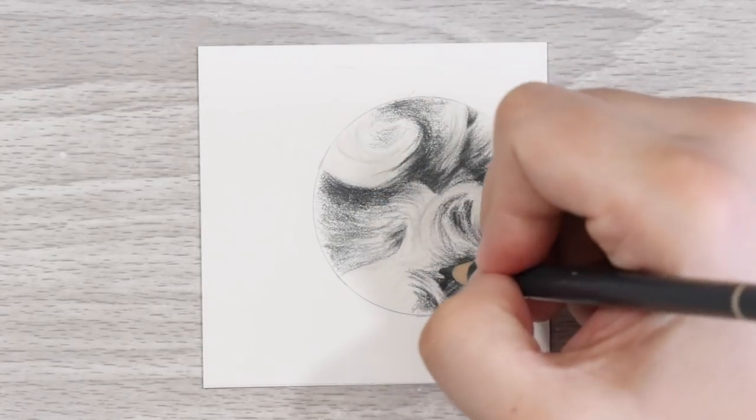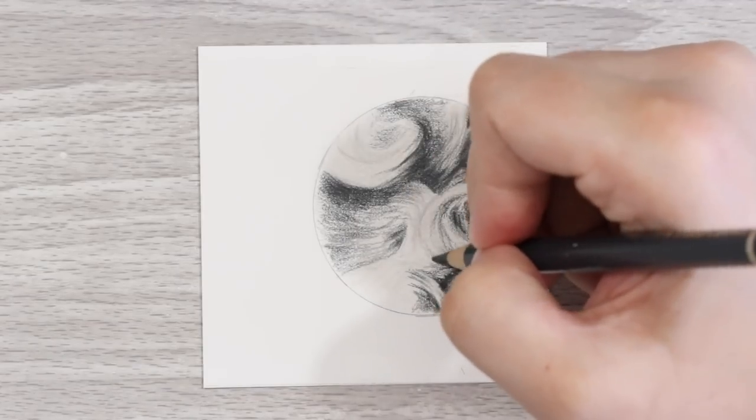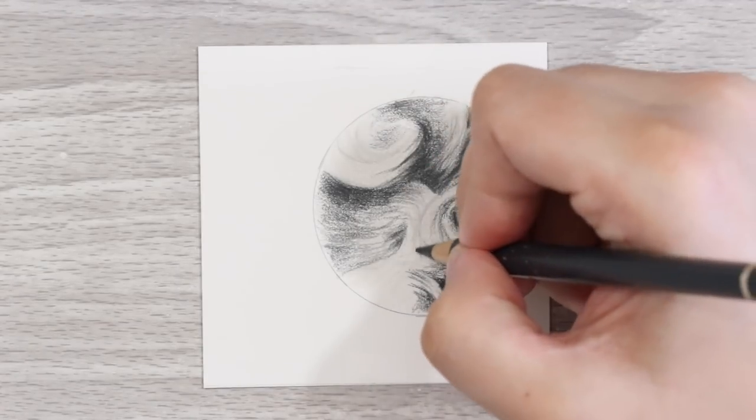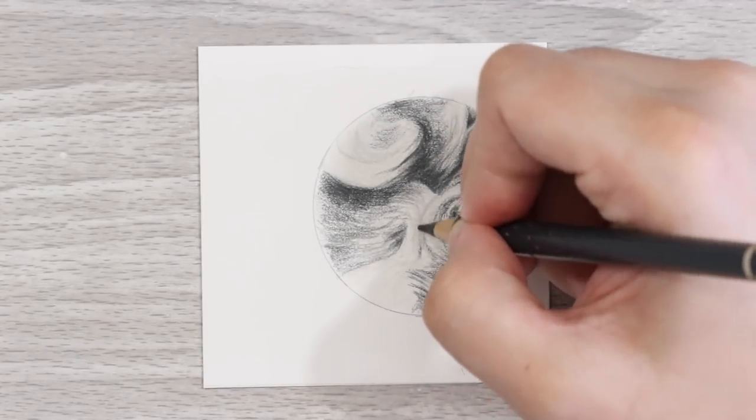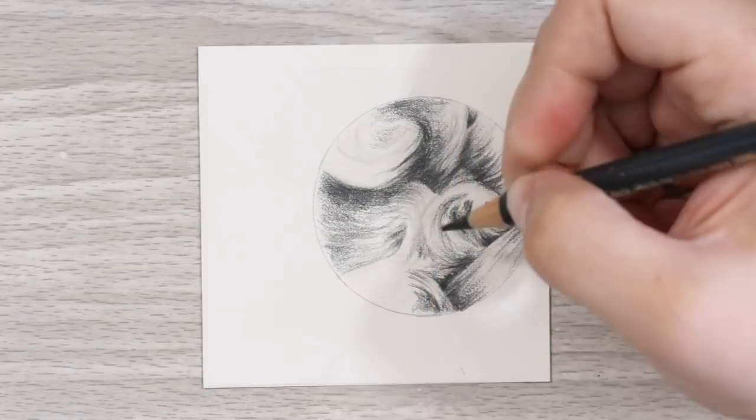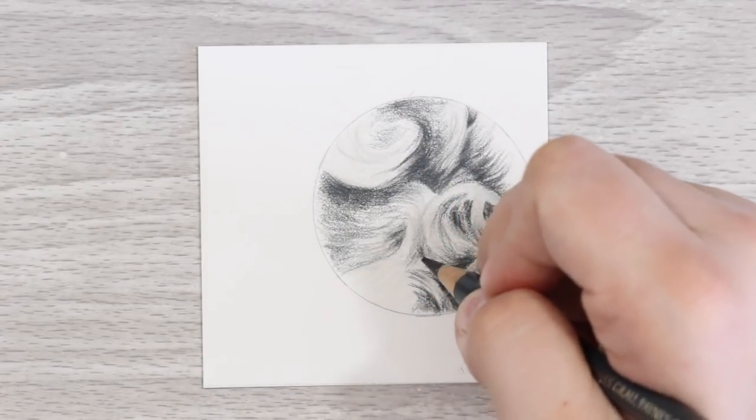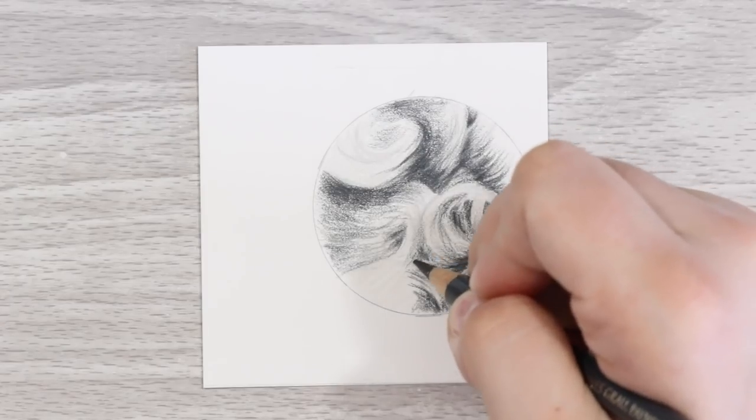Once you've worked over a couple of shapes you will see the fur really start to pull together and the directions of each shape should be visible and apparent. If they're not then you need to work on it some more and really study the shapes and the fur direction and apply that to each of your clumps or sections.